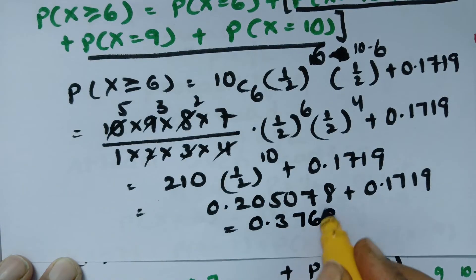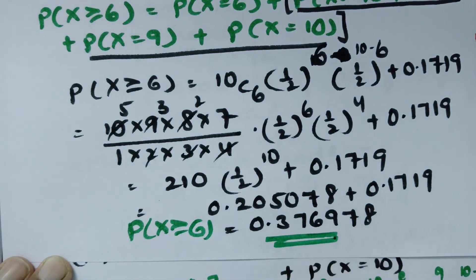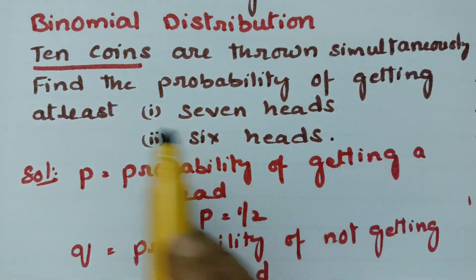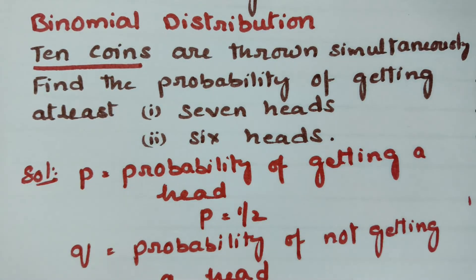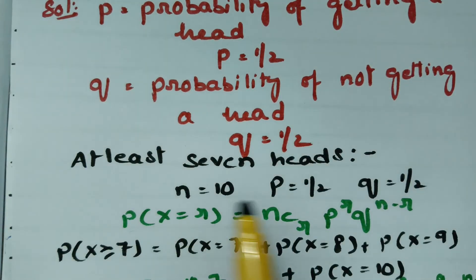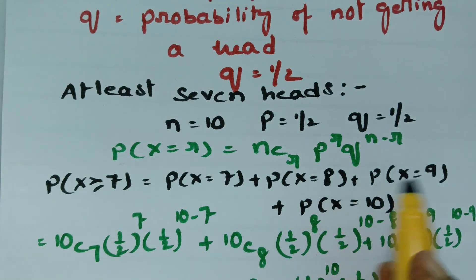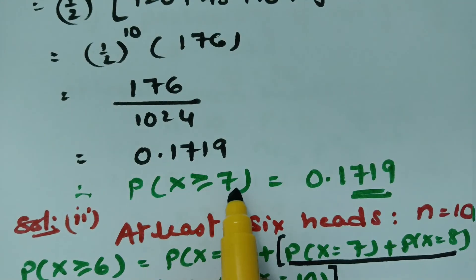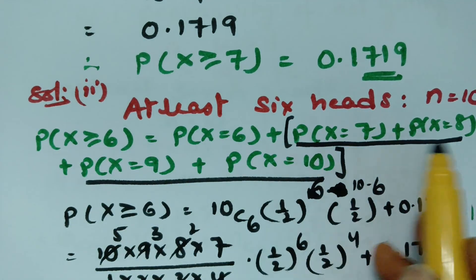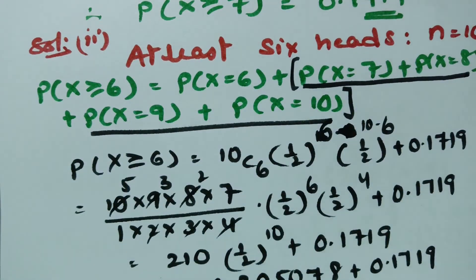This gives 210 times half power 10, plus 0.1719. So this value is 0.205078 plus 0.1719. Therefore the value is 0.376978. Therefore, the probability of getting at least 6 heads is 0.376978. This is how we solve it — 10 coins thrown simultaneously, finding probability of at least 7 heads (0.1719) and at least 6 heads (0.376978) using the binomial distribution formula. Thank you for watching.